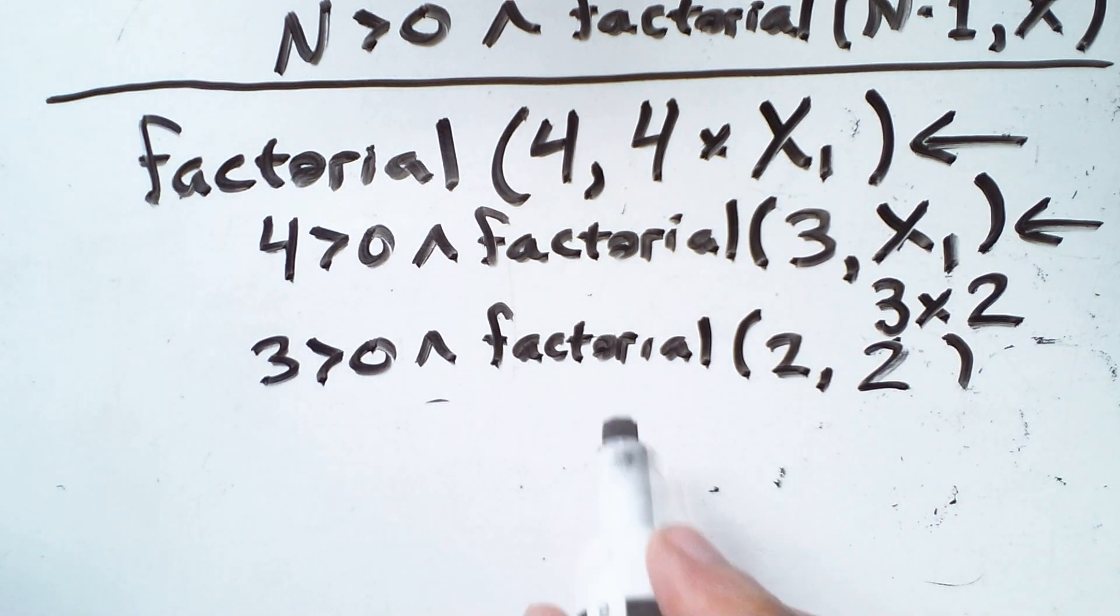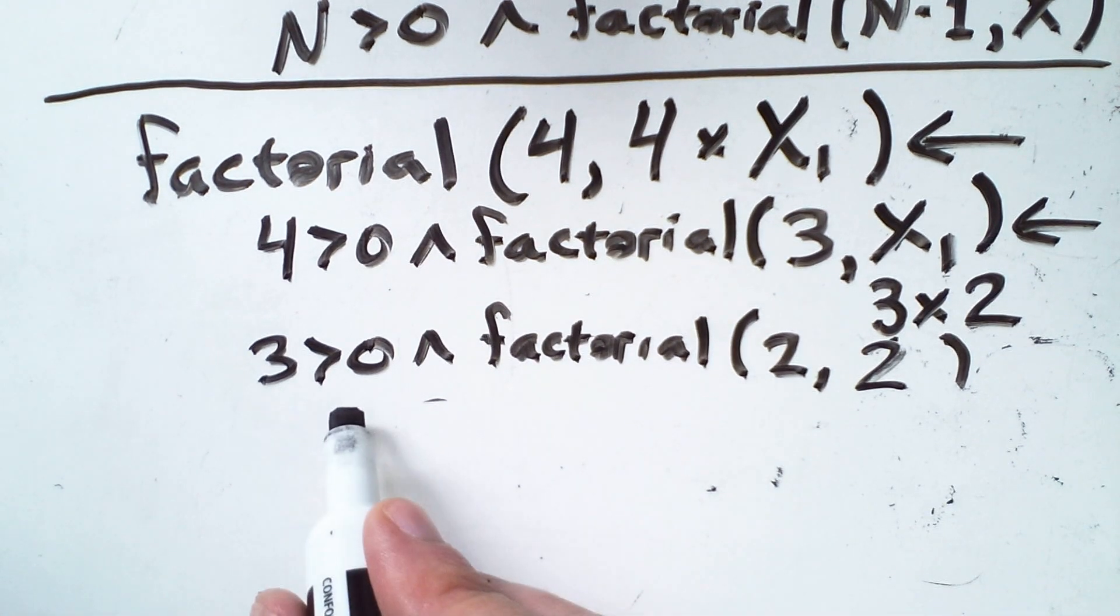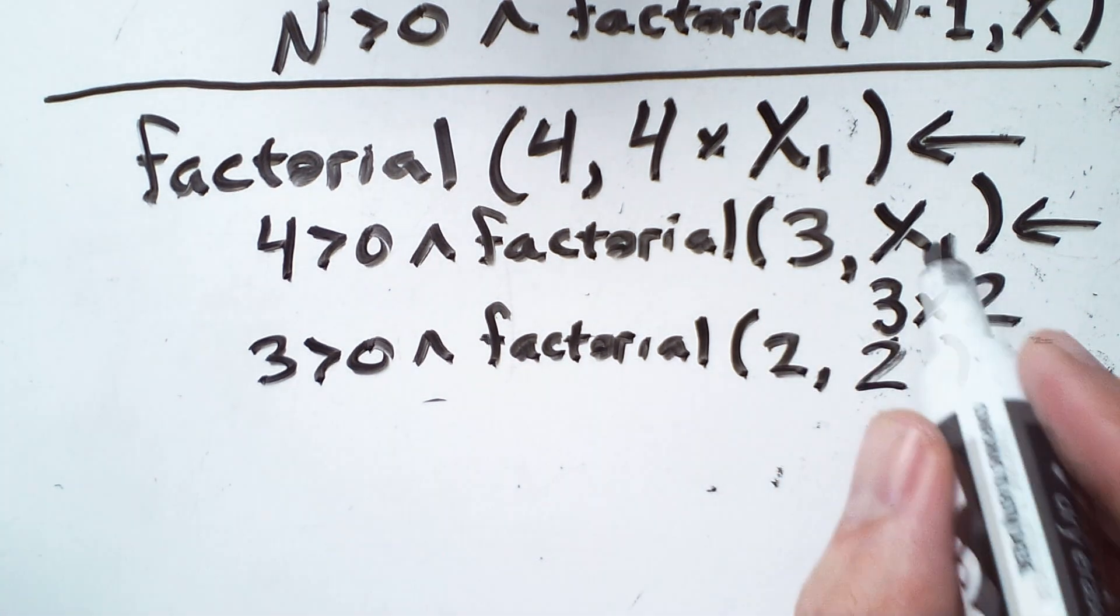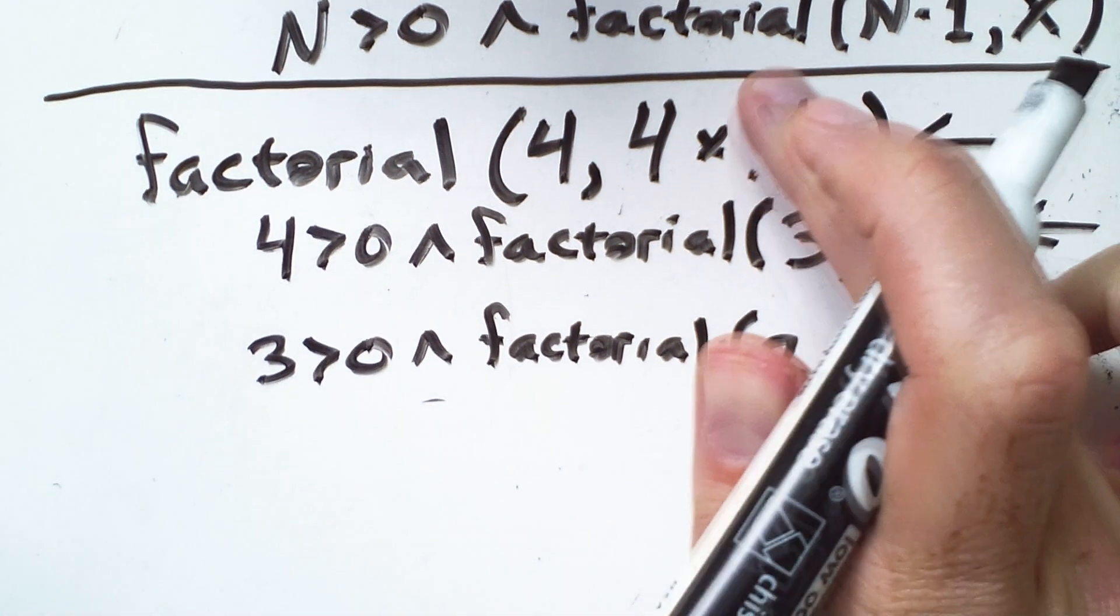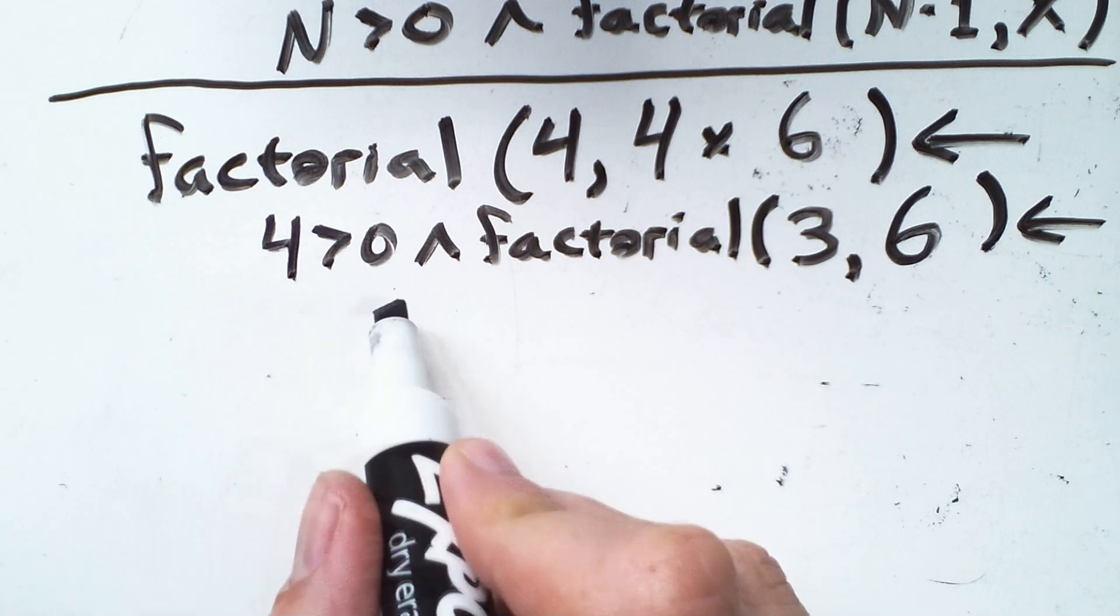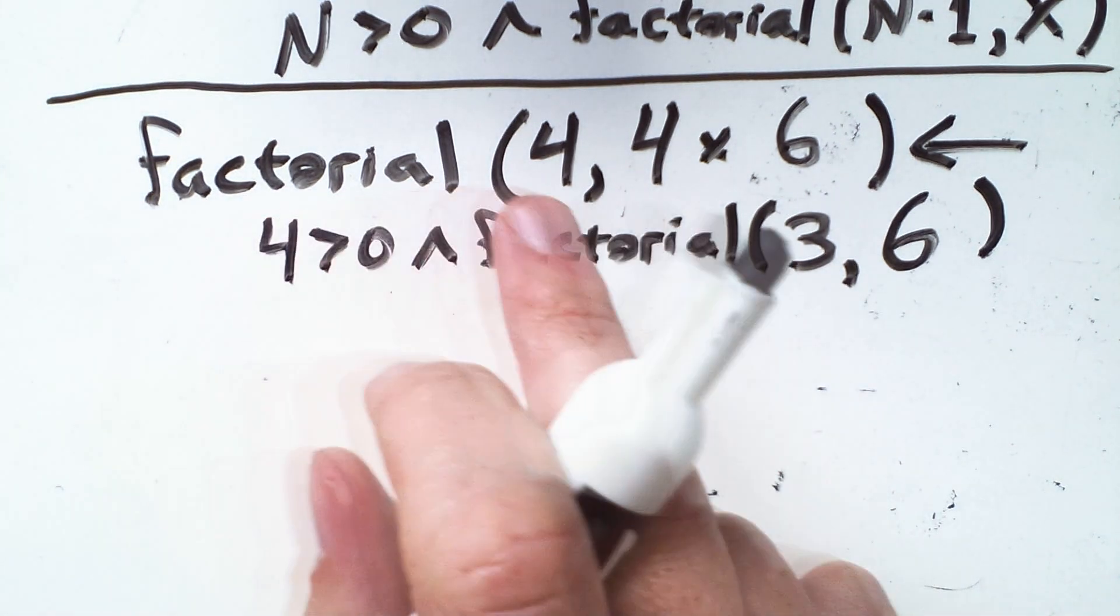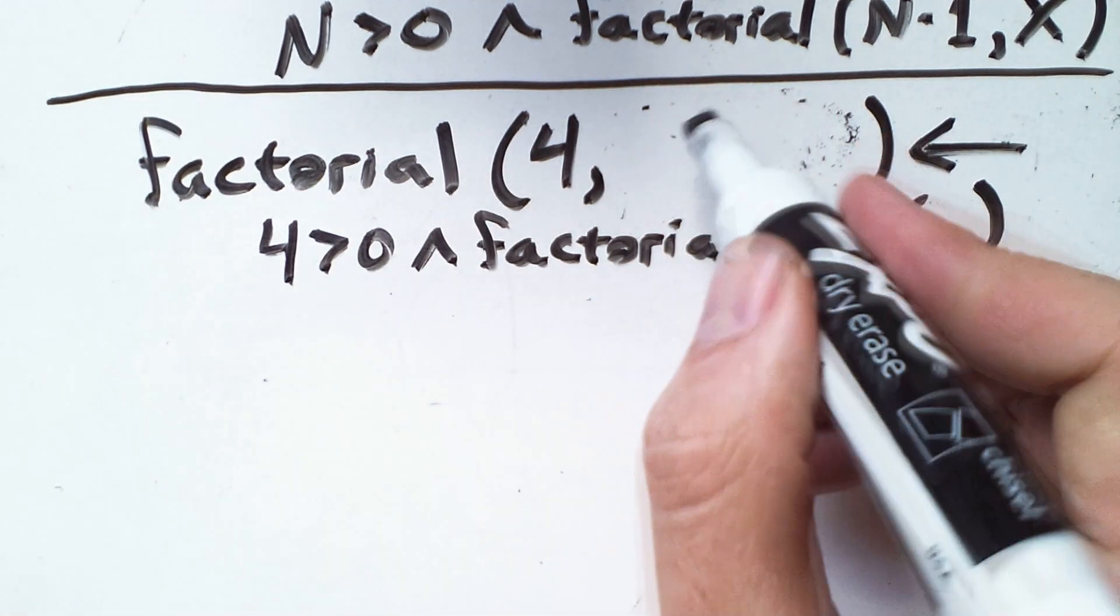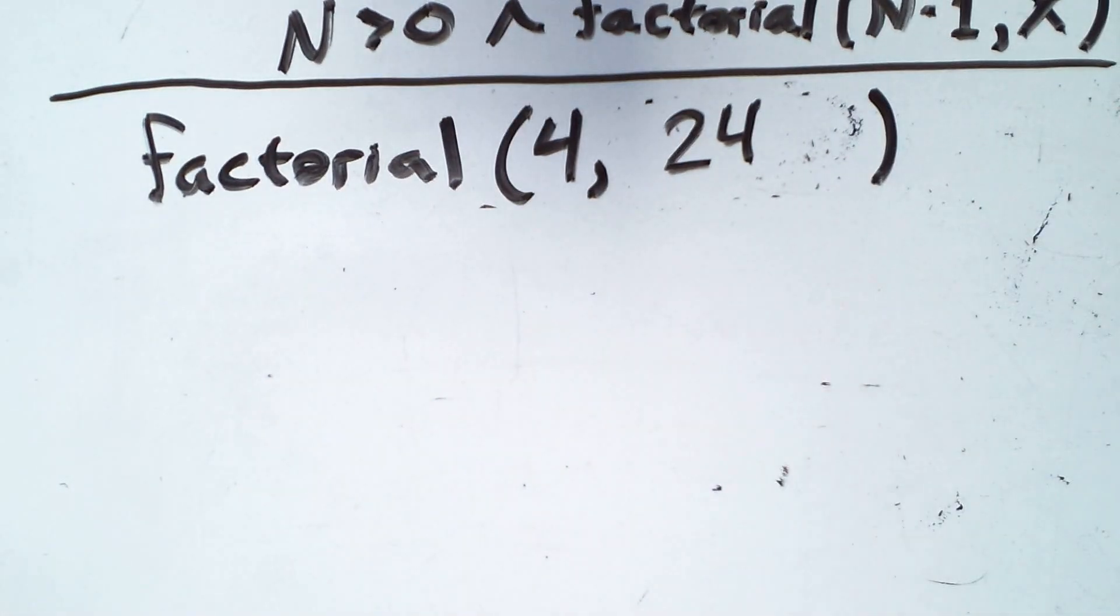And so now we know that factorial 2, 2 is true. And we already know that 3 is greater than 0. And so because these are both true, it means that this fact is true, where the x1 equals 3 times 2. And so that x1 is 6. And that same x1 will go here. So factorial 3 is 6, and 4 is greater than 0. And because those facts are true, it implies that the factorial of 4 is 4 times 6, which is 24. And using our knowledge of arithmetic, we know that is correct.